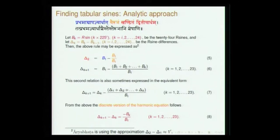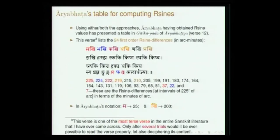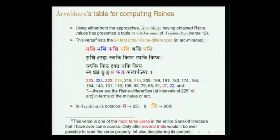This covers the Aryabhatan approach to finding sine values — one geometric, the other analytic — both yielding the sine table. The sine table presented by Aryabhata is in the form of a single verse giving the R-sine differences (first order sine differences), which keep decreasing. It starts with 'makhi, bhaki, phakhi' and ends with 'ta, pha, cha' — this is how he presented the entire sine table in one single Arya verse.